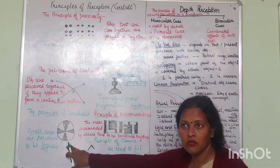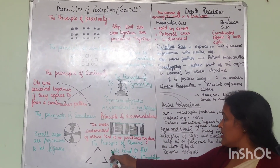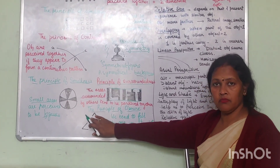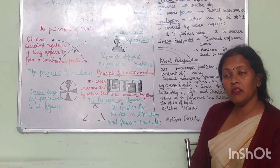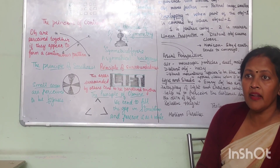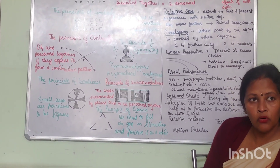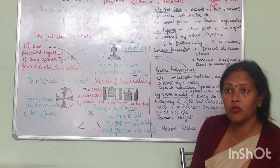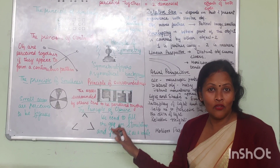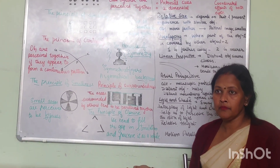There are two reasons for figure: one is small, one is symmetry, and the third is surroundedness. Now, the last is the principle of closure. It says that when we have uneven lines which are not joining, we still close those spaces and make it a figure. What do we make? A triangle — very simple. But actually it is not a triangle; it is three angles and six lines making three angles.